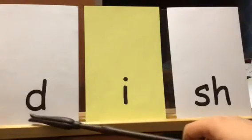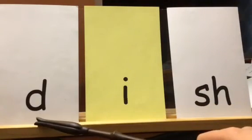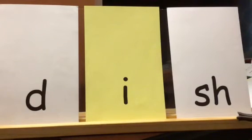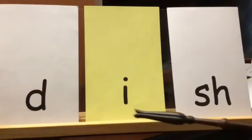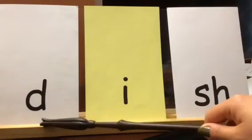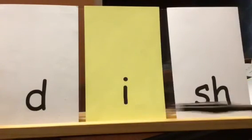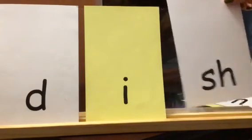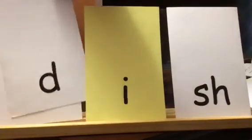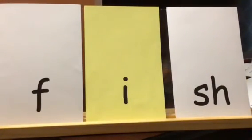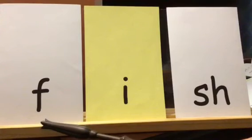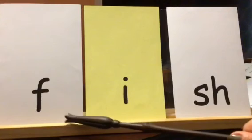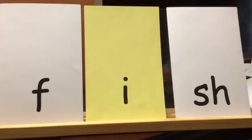D says 'd', I says 'i', SH says 'sh'. Dish! Dish! Dish! Very good! Can you please put my meal on the dish? Here's our last word. F says 'f', I says 'i', SH says 'sh'. Fish! Fish! Very good! Like, did you see that fish swim in the ocean? Excellent job, boys and girls!